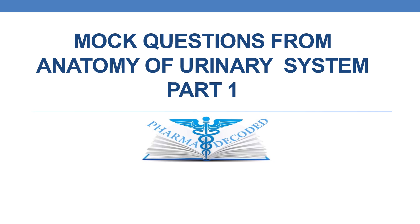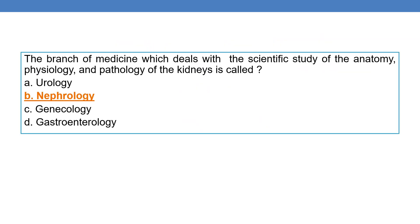Hello everyone. Now let us discuss more questions from Anatomy of Urinary System Part 1. Coming to the first question: the branch of medicine which deals with the scientific study of anatomy, physiology and pathology of kidneys is called nephrology.